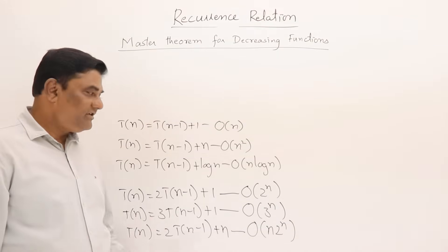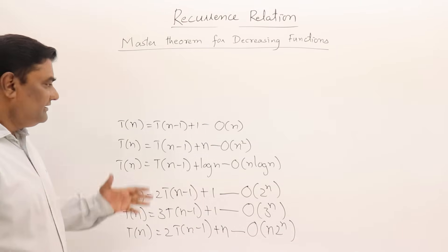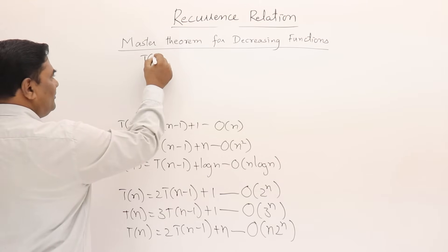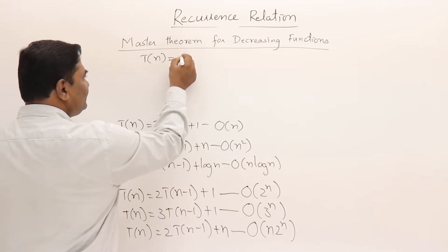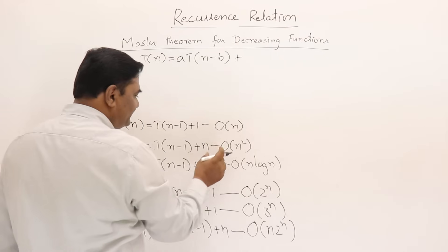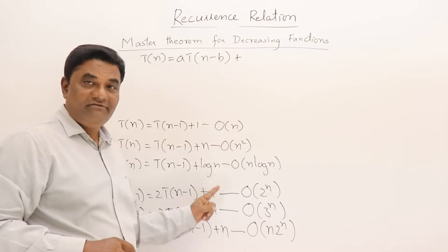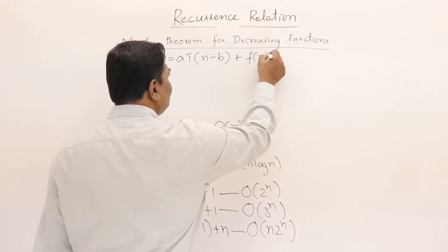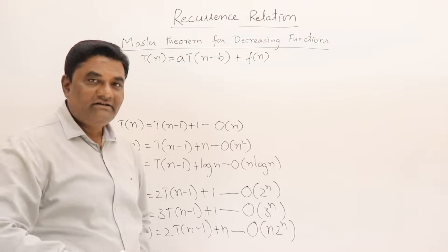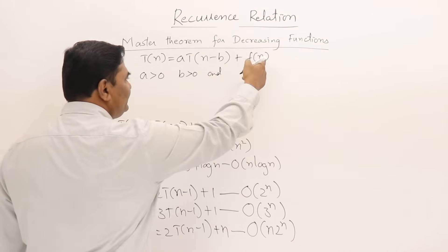Now your observation is important. I have written some recurrence relations and their answers — you can pause and observe. From this observation, I will define the general form. The recurrence relation is of the form T(n) = a·T(n-b) + f(n), where a is the coefficient, b is subtracted, and f(n) is an asymptotic value.